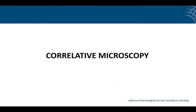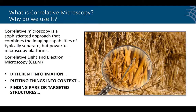Now I'm moving into correlative microscopy. There are so many ways to do it — I'll show you just one example today. Correlative microscopy is a sophisticated approach that typically combines imaging capabilities of different but powerful microscopy platforms. The most common form is called CLEM — correlative light and electron microscopy. The primary reasons to use it: first, you get different information. For instance, people working with fluorescent probes want to see something inside or on the surface of a cell, while fluorescence gives chemical information and SEM gives structural information.